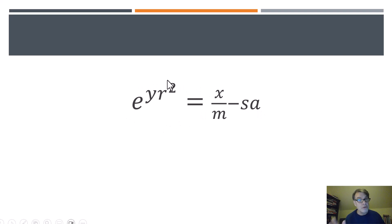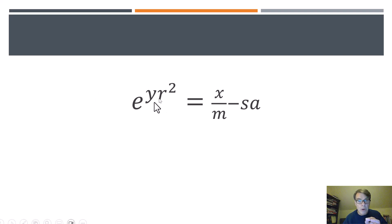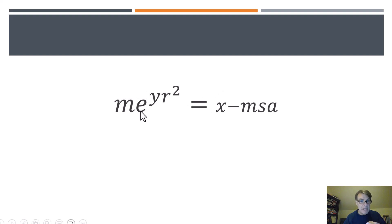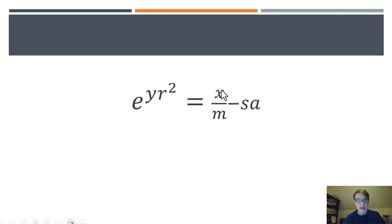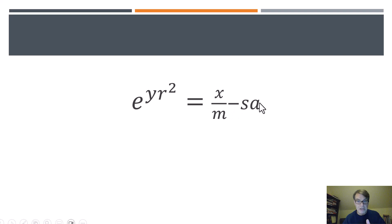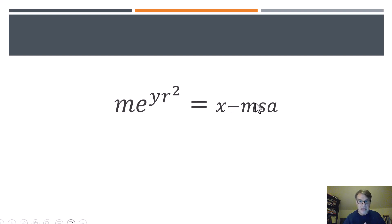Now we're very close to a breakthrough in understanding this equation. We want to get rid of this m in the denominator, so we're going to multiply both sides by m. What we're going to get is m e to the y r squared. When we multiply this side by m, that gets rid of the m in the denominator, leaving us with x. And then multiplying both sides by m gives us m s a.